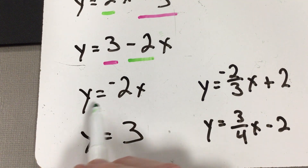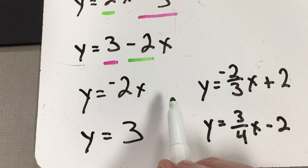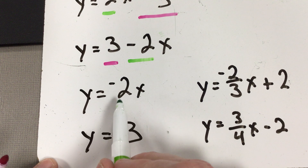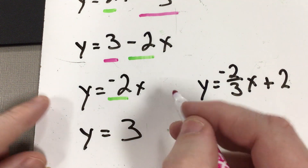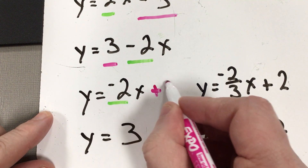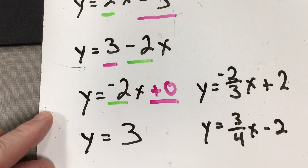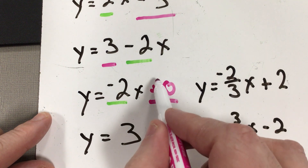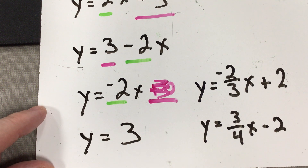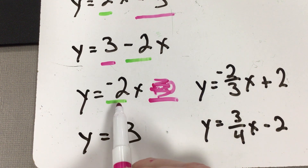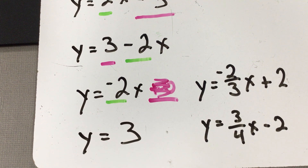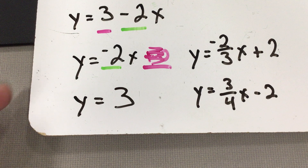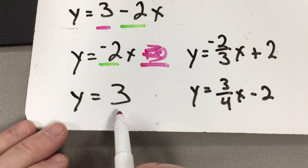Looking at y equals negative 2x with nothing behind it: this is still the slope, but you do not have a y-intercept — or rather, the y-intercept is zero. Normally they don't write it because it's zero, so y equals negative 2x means the slope is negative 2 and the y-intercept is zero.